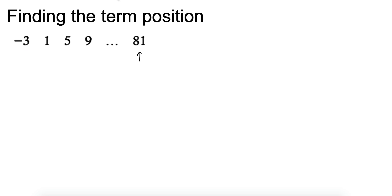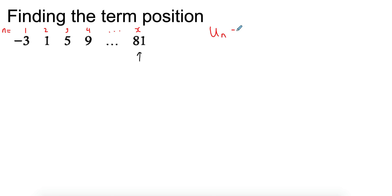We know that this is the first term, second term, third term, fourth term, and so on — the x-th term. Remember that the letter n in the nth term formula refers to the term position, so the n values are here. If we write the formula down, the thing we're trying to find is the term position, which is n.